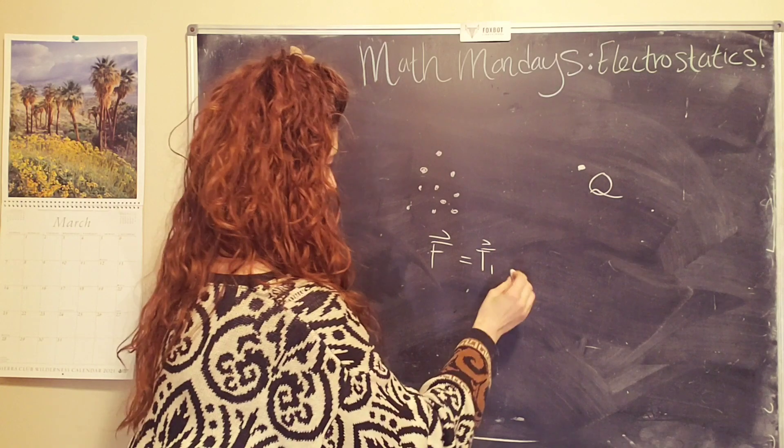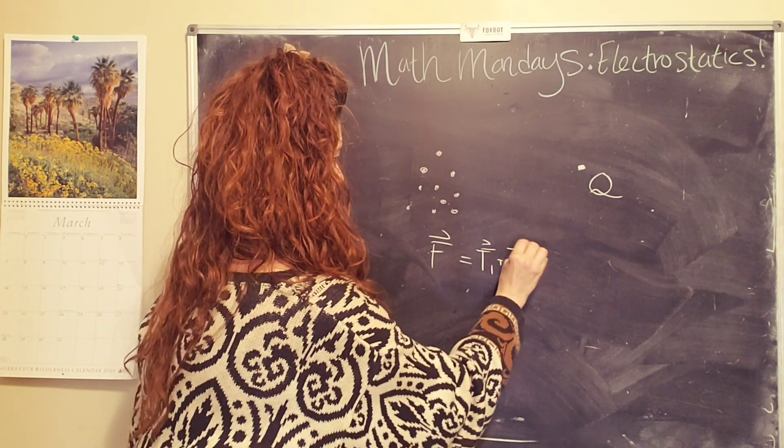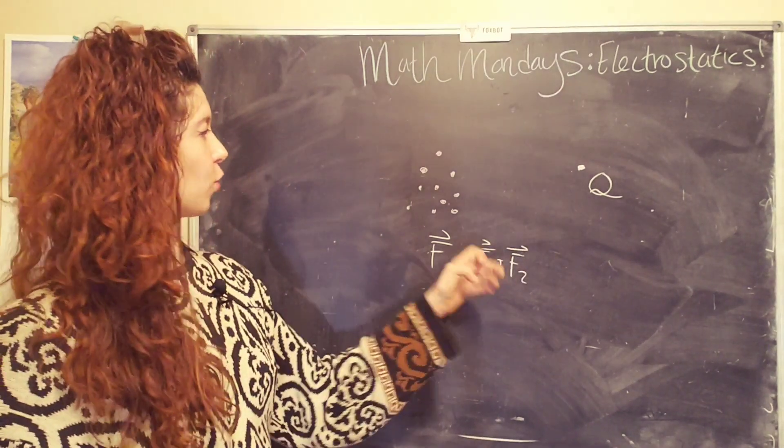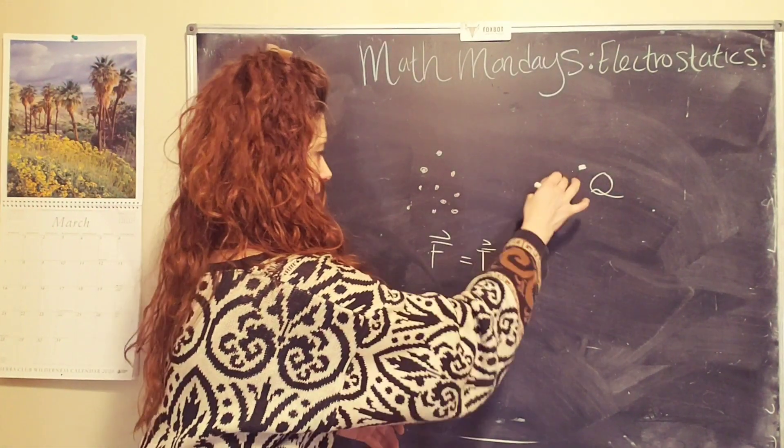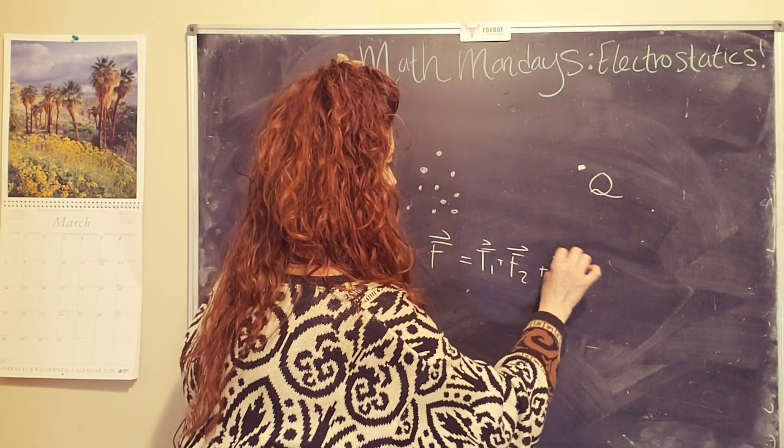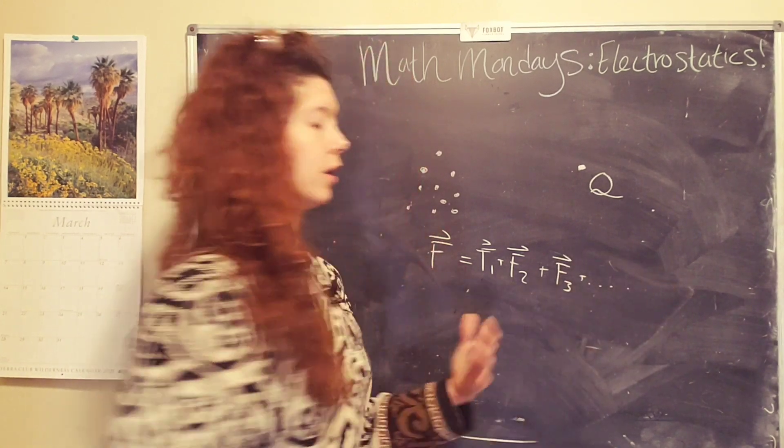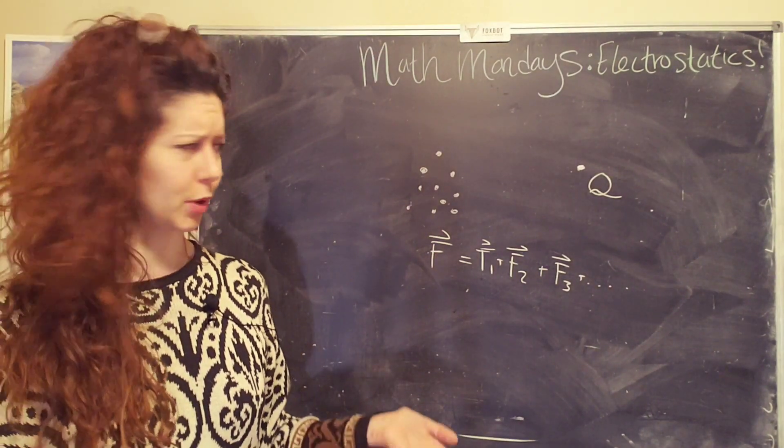So basically we're like, okay, force one, that's a funky F, plus the force between the first charge and our test charge, plus the force between the second one and our test charge, plus the force between the third one and our test charge, and so on. Okay, that's pretty wild.